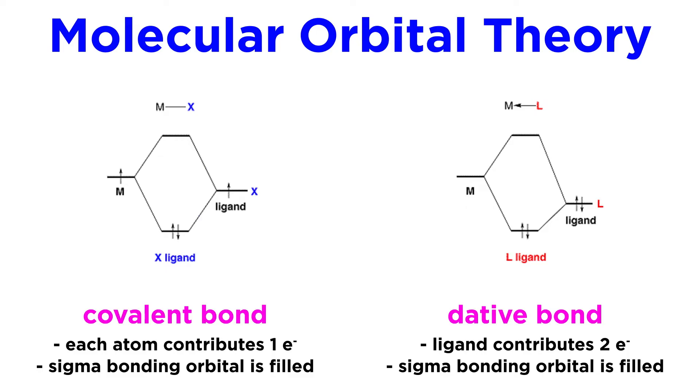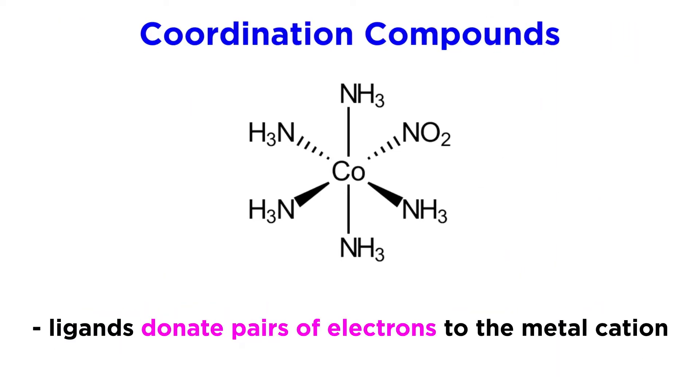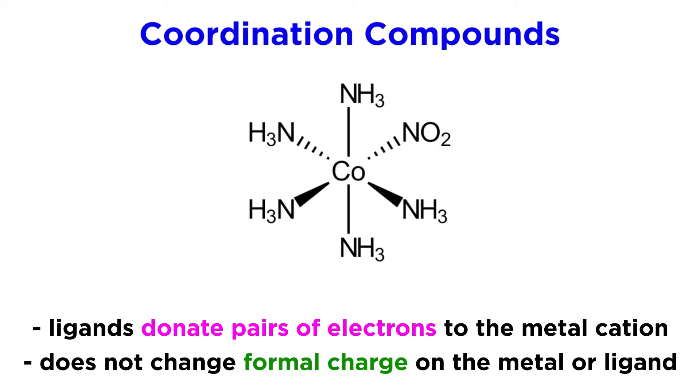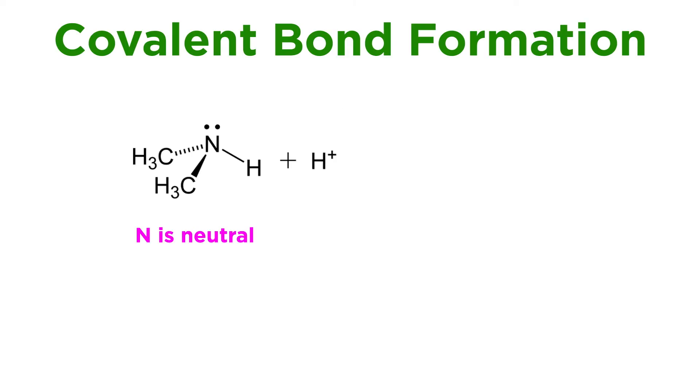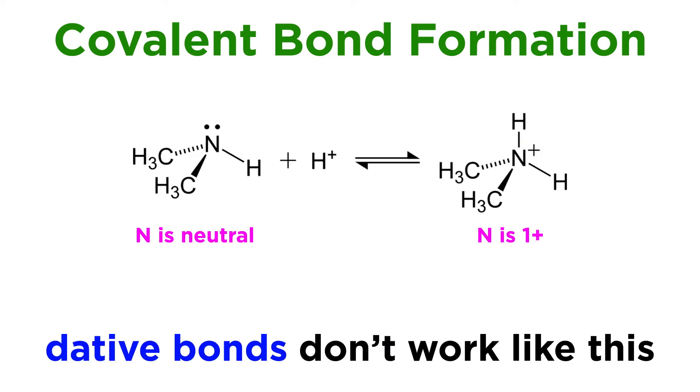This is not really a new concept, as we have seen electron-rich species acting as Lewis bases before. The one thing that will take a bit of getting used to is that when we have ligands contributing pairs of electrons to form dative bonds with a metal cation, we do not end up with formal charges in the same way we would expect in organic chemistry. In other words, if a nitrogen atom uses its lone pair to pick up a proton, it ends up with a formal positive charge. But that will not be the case when neutral ligands use their electron density to coordinate to a metal atom.